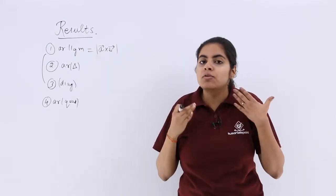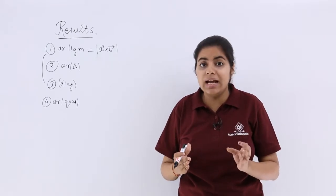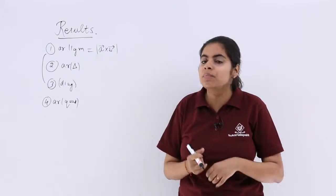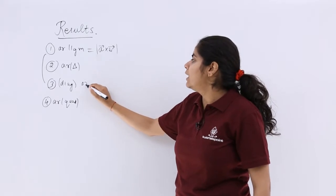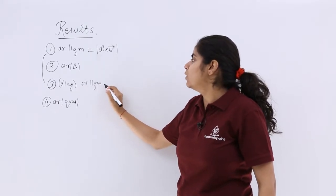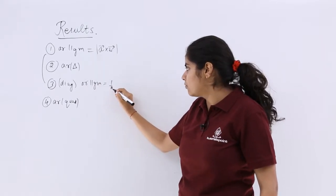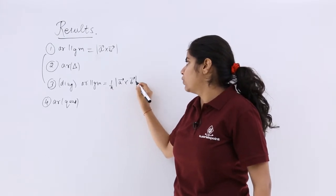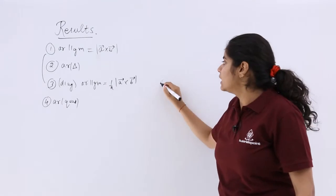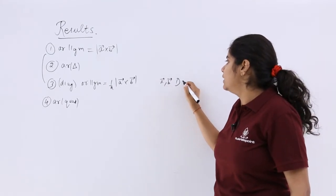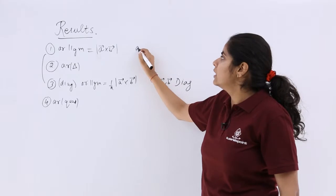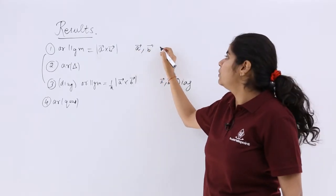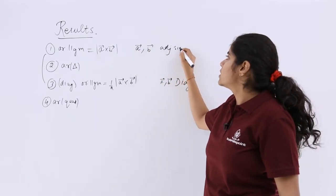But if I do not have the adjacent sides provided, I have the diagonals provided, then in case of the diagonals provided, the area of the parallelogram will be half and the same thing, A vector cross B vector. Mind it, here the A vector and here the B vector are the diagonals, and there the A vector and there the B vector were the adjacent sides.